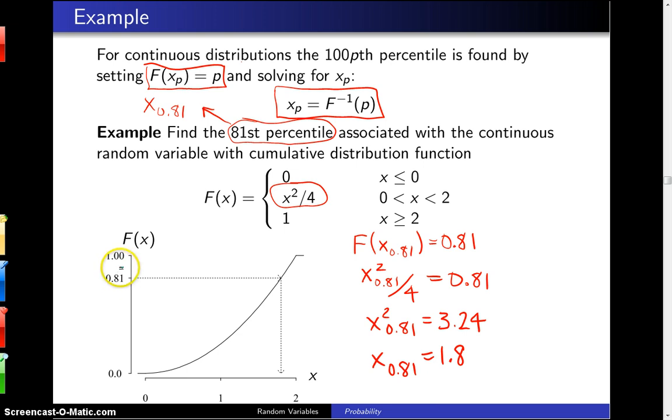Geometrically, what's going on here is we take 0.81 on the vertical axis for the CDF, go across to the function and down, and when we do so, 1.8 will be the 81st percentile.